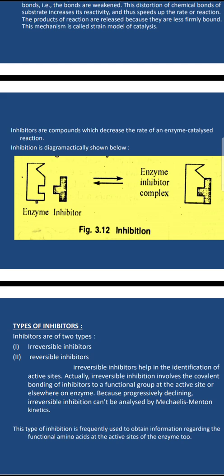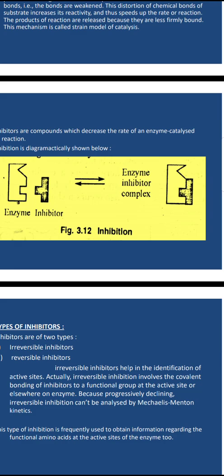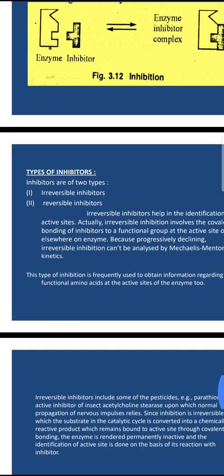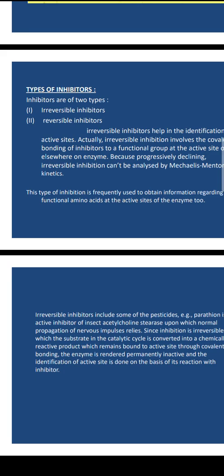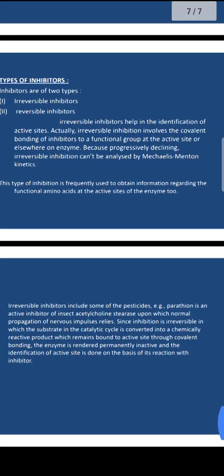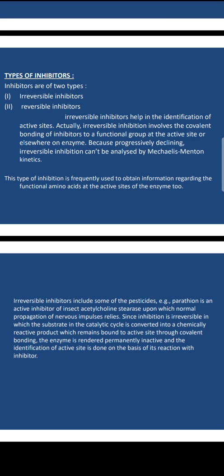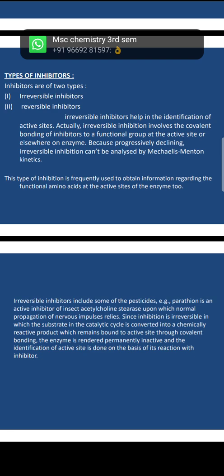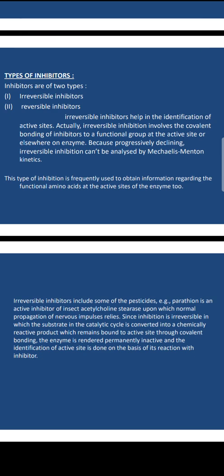Inhibitors are compounds which decrease the rate of an enzyme-catalyzed reaction. Inhibitors are of two types: reversible and irreversible. Many different reversible inhibitors help in the identification of active sites. Irreversible inhibitors involve the covalent bonding of inhibitors to a functional group at the active site or elsewhere on the enzyme, causing progressive decline in activity.